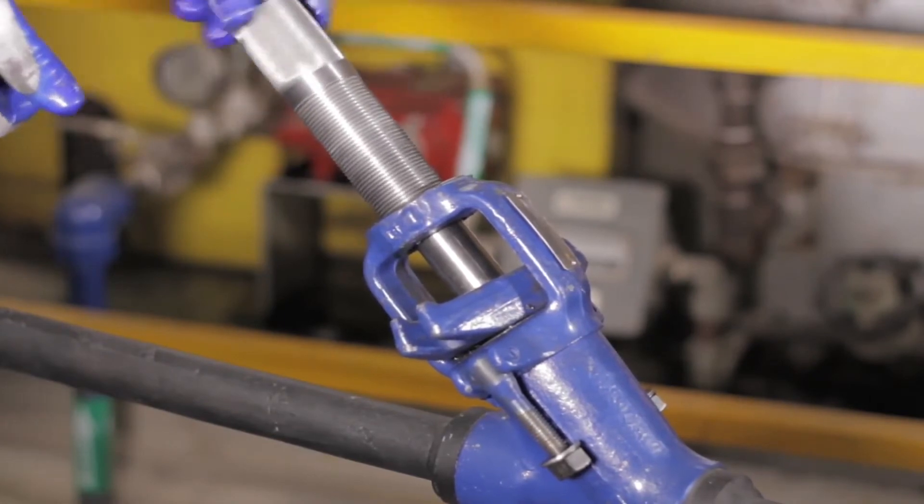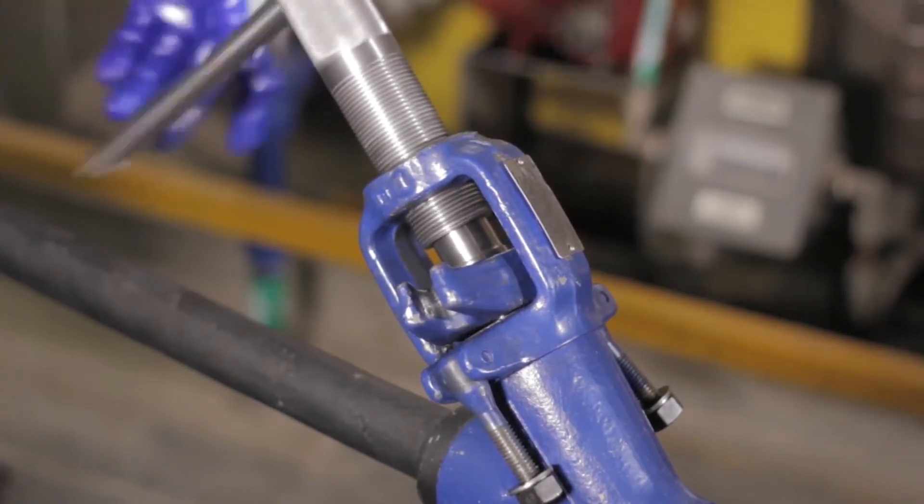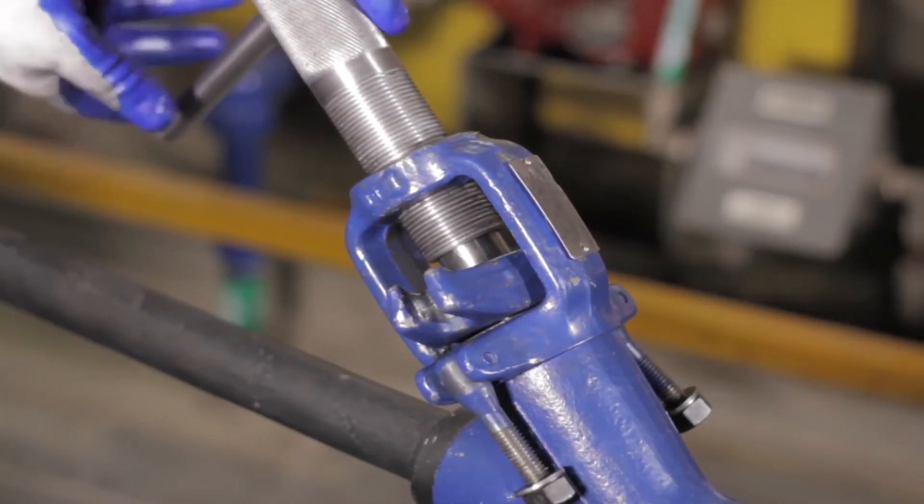The guide is again used and it is screwed on until the holes on both tools line up. By turning the pry bar counterclockwise, the backseat is unscrewed out of the body.